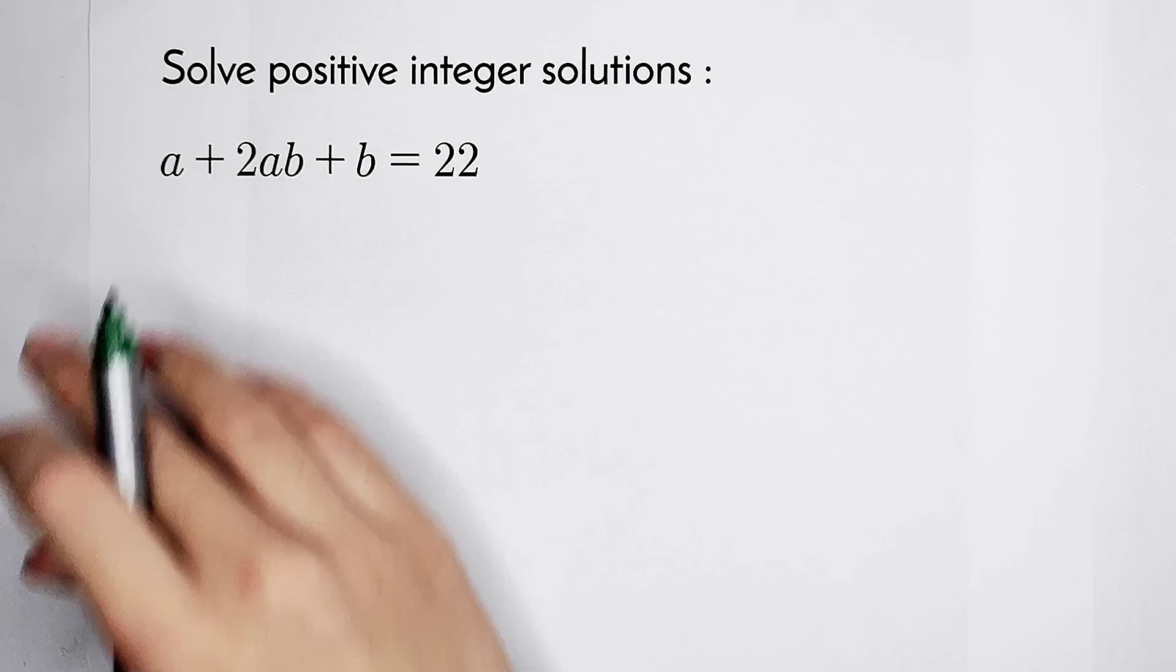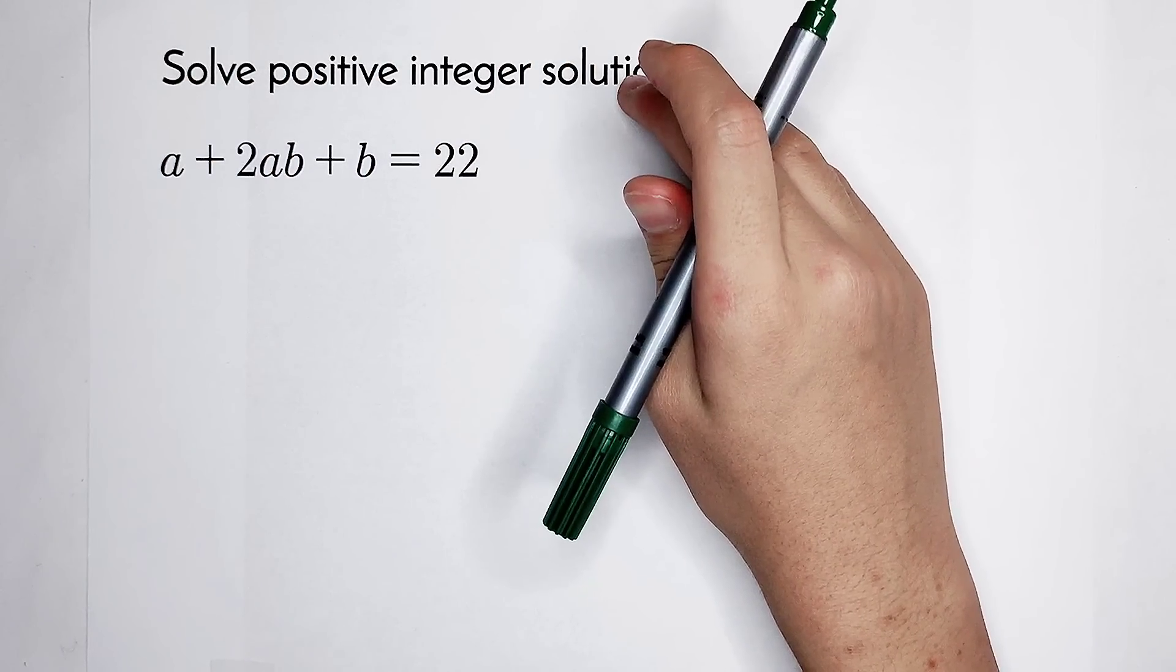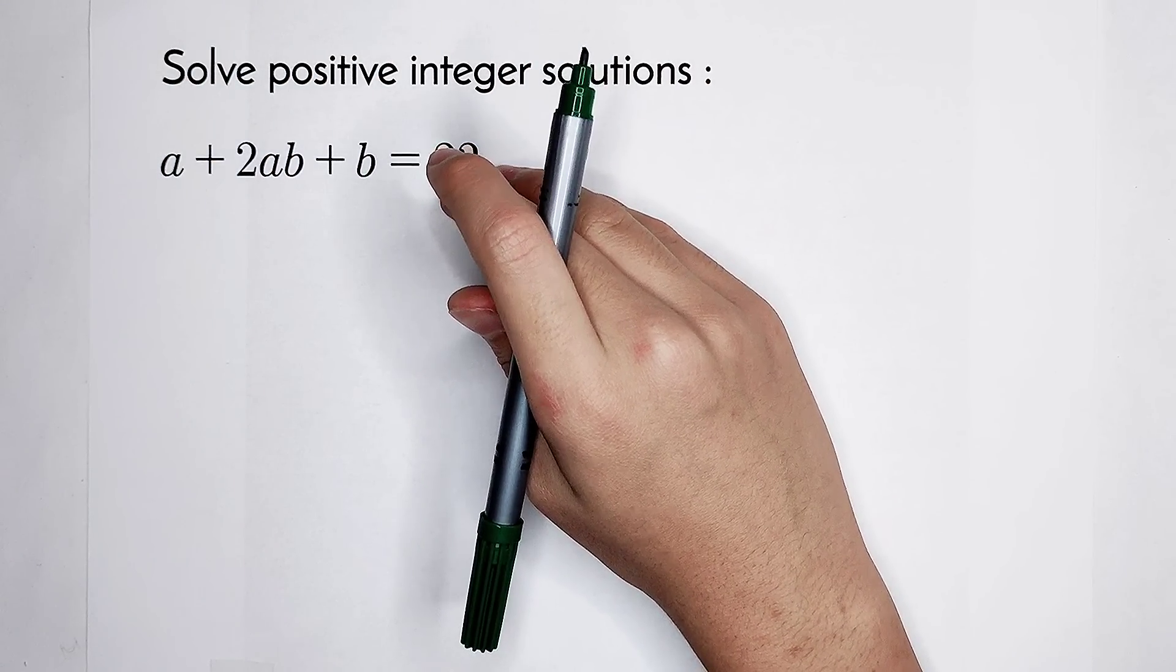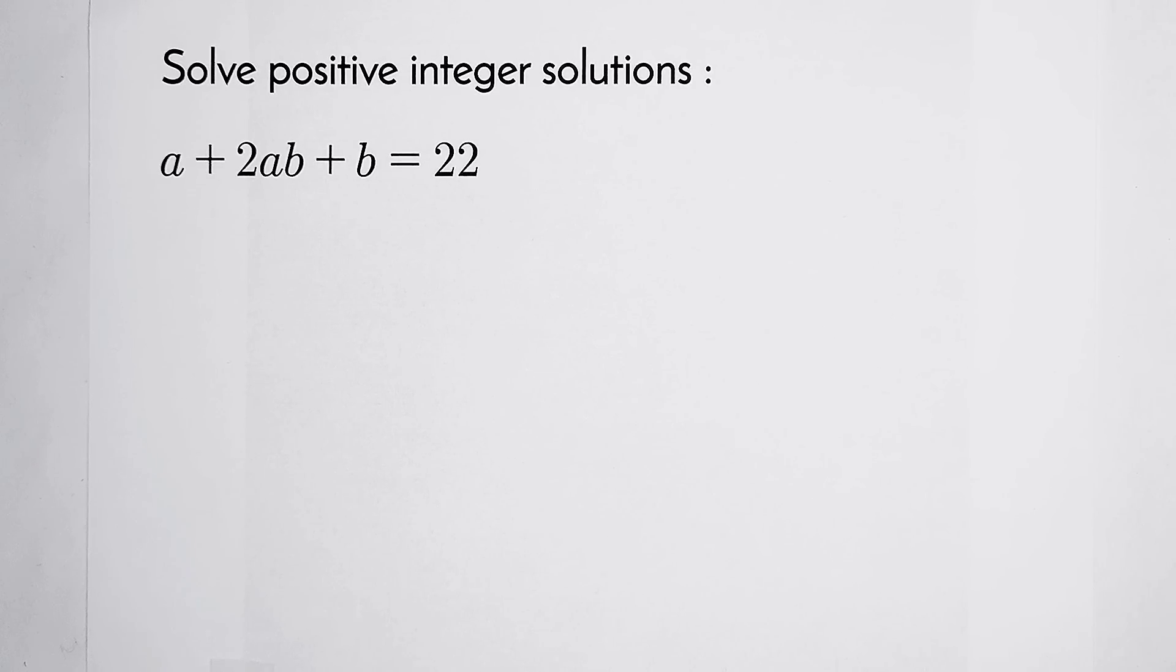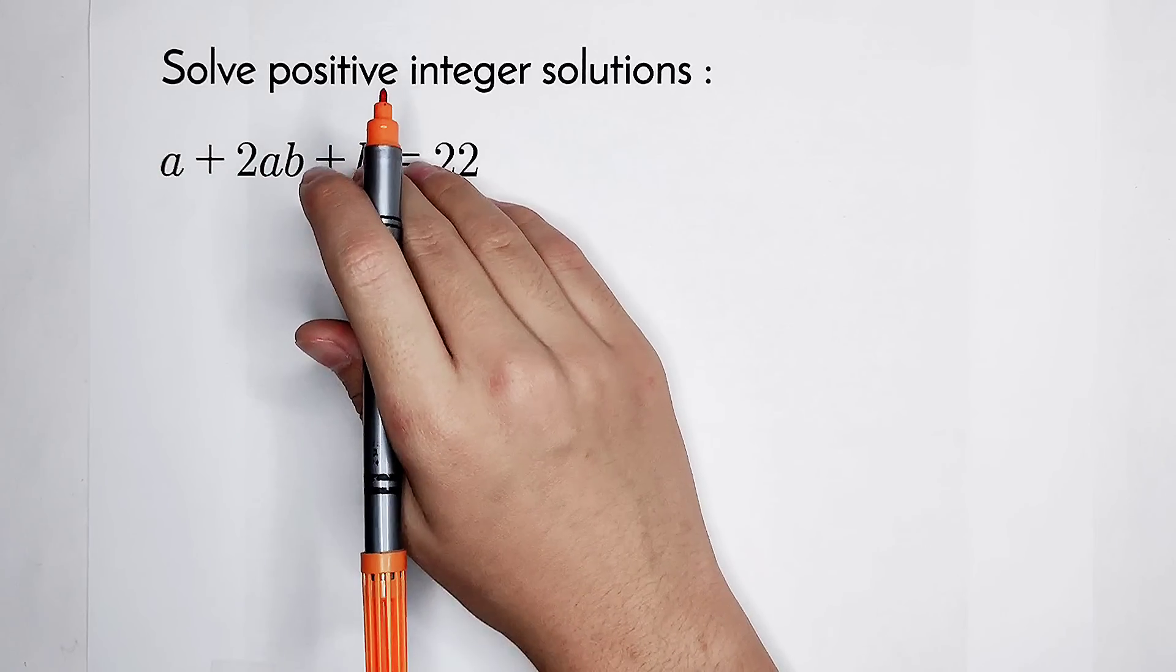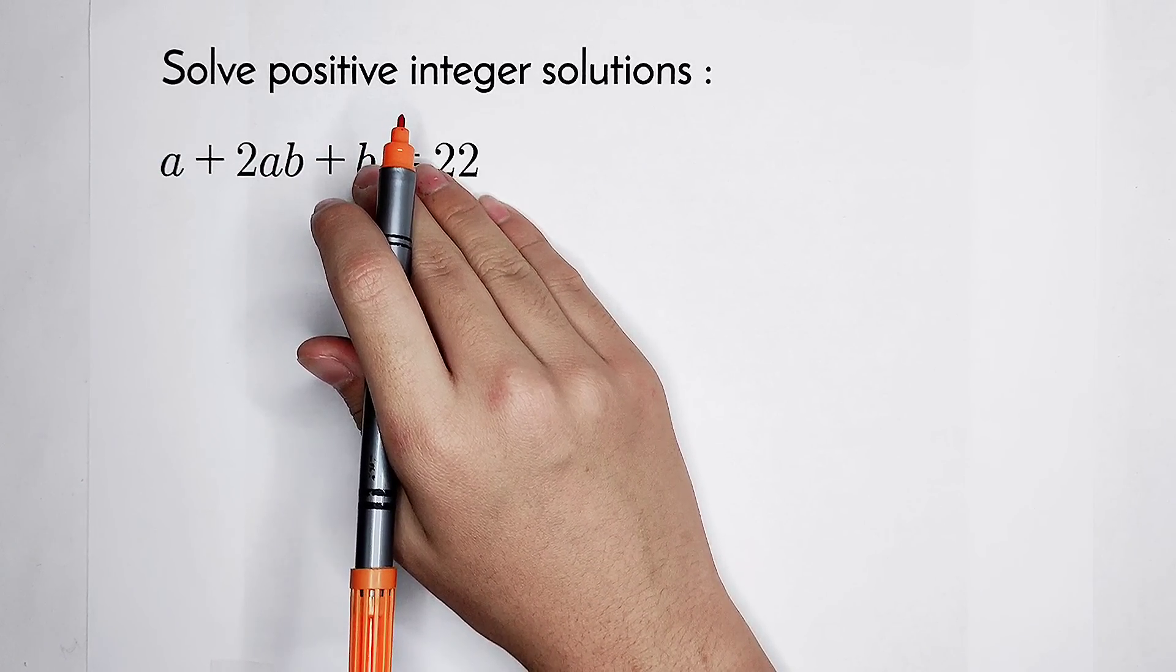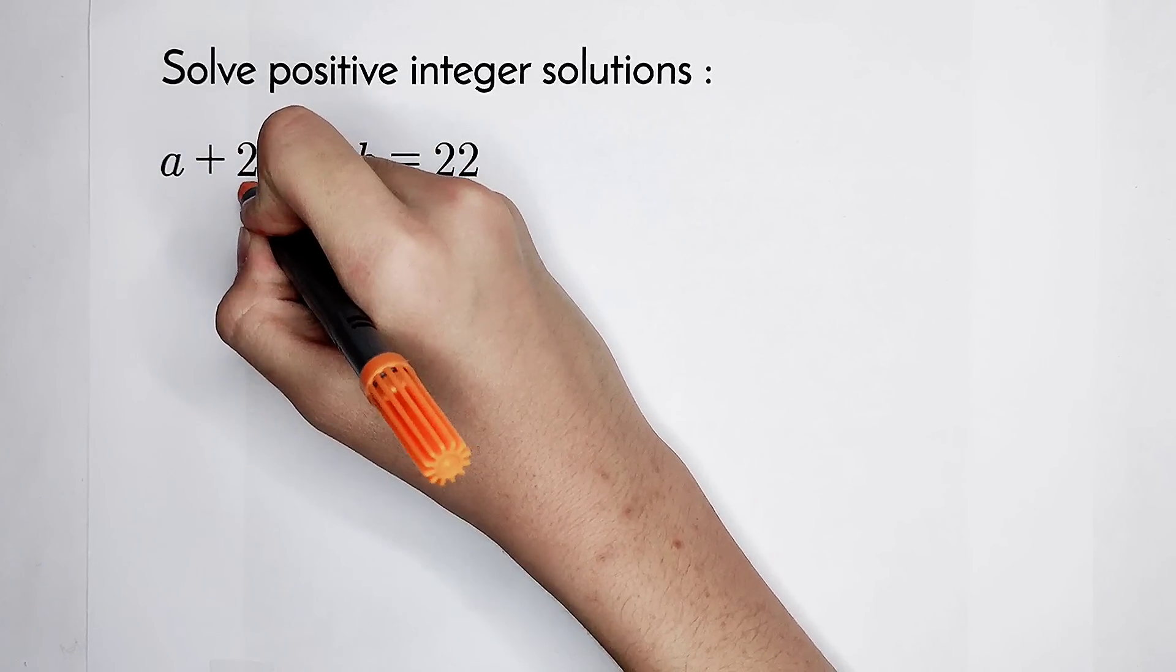Because we are going to solve the positive integer solutions of this equation, we should factor the left side. But now I have a question. How should we factor it? The coefficient of a and b are both 1, but the coefficient of a times b is 2.